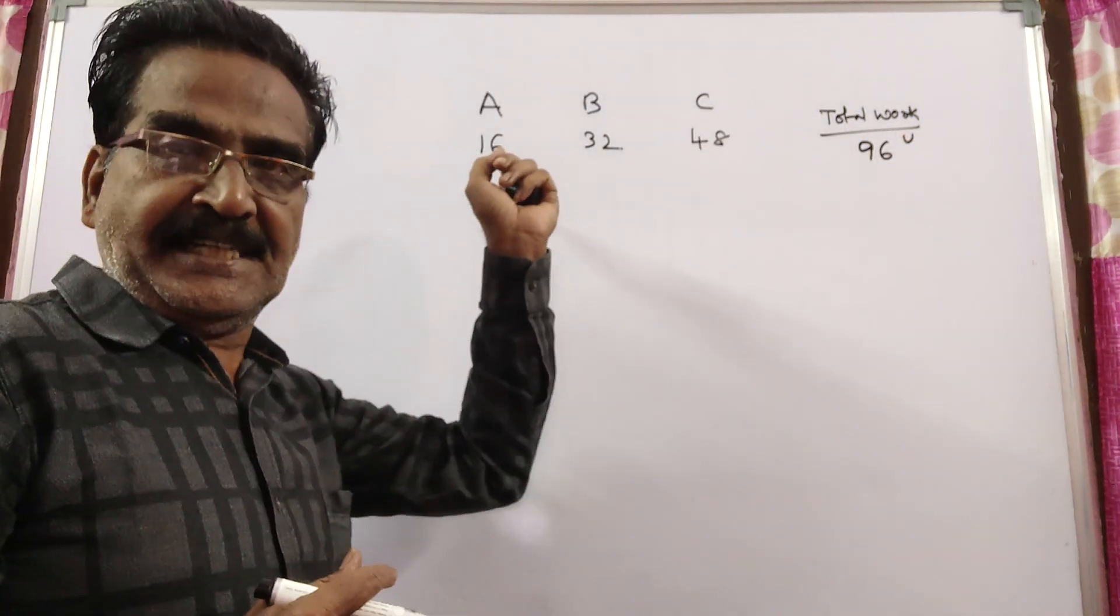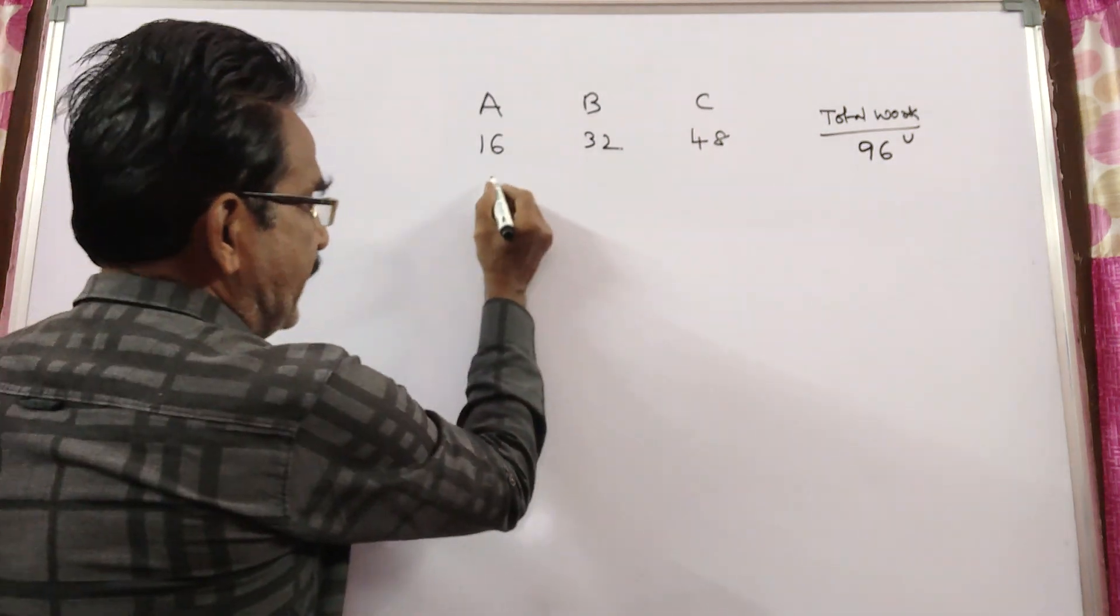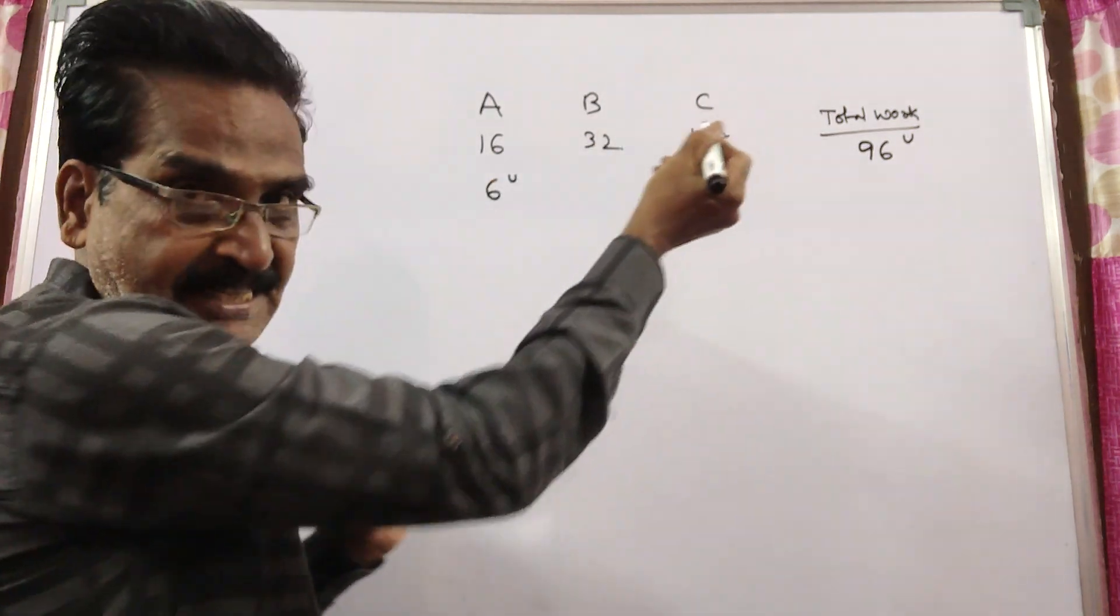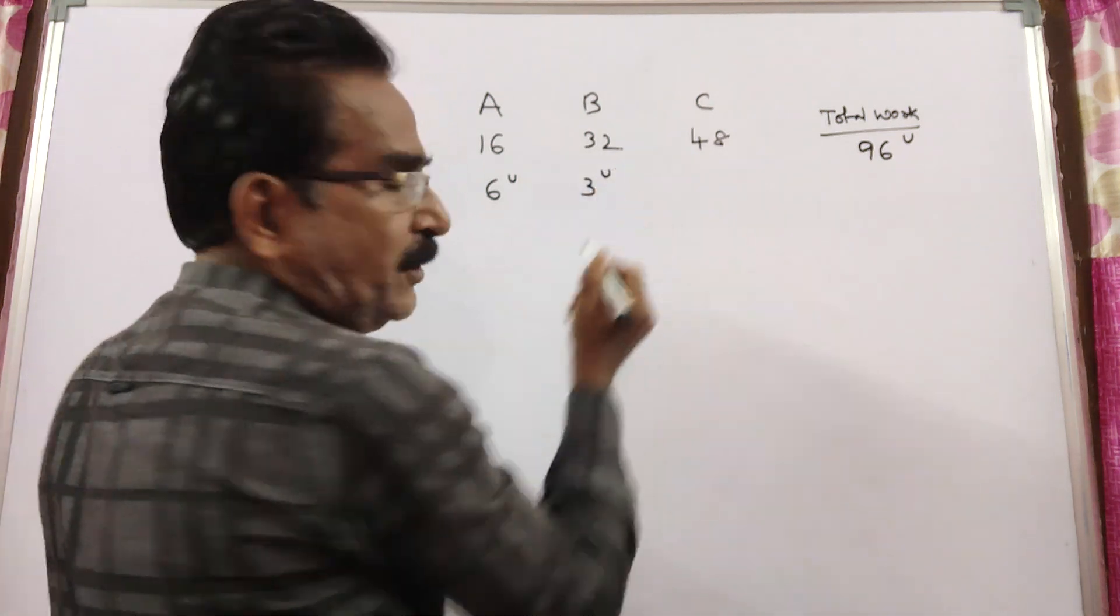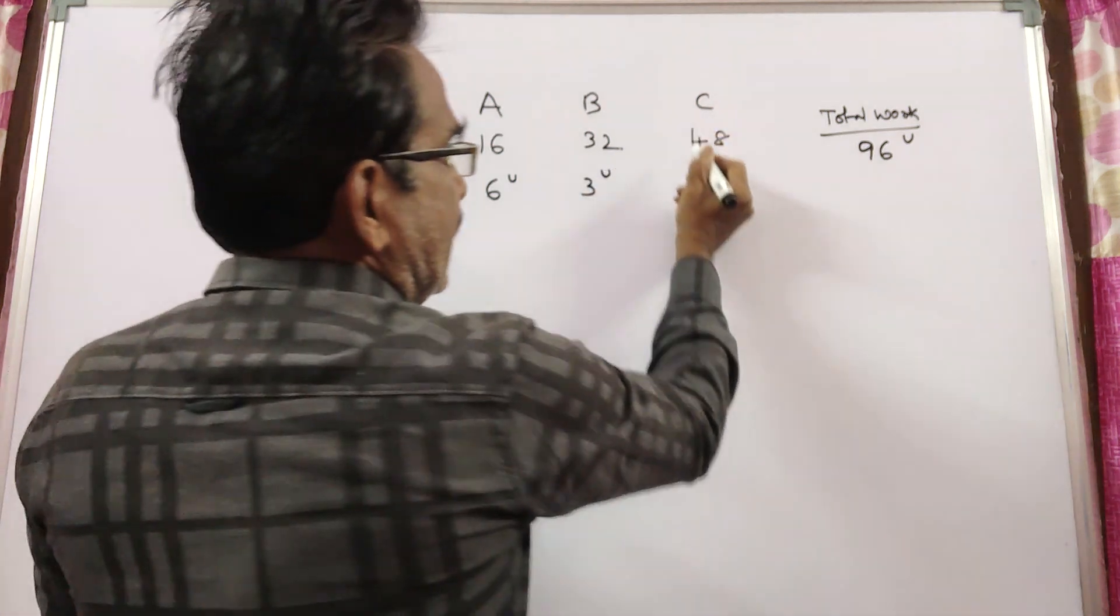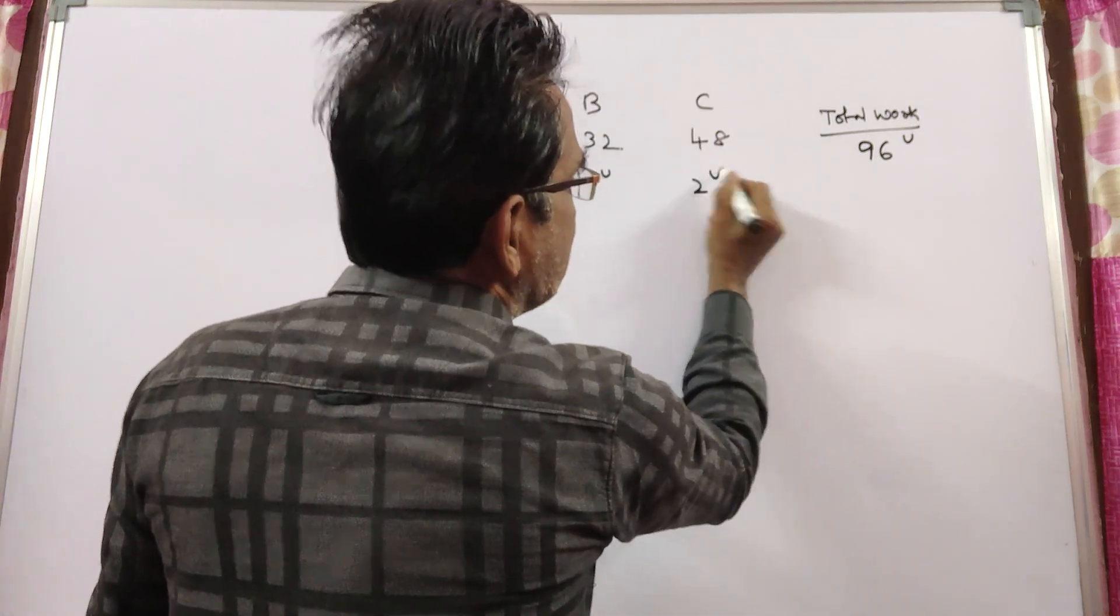A can complete in 16 days. That means A can do 6 units of work per day. B can do 3 units of work per day and C can do 2 units of work per day.